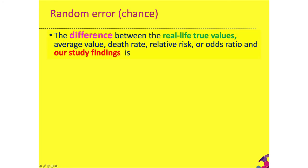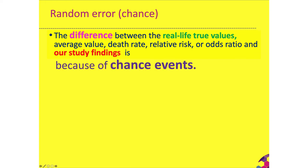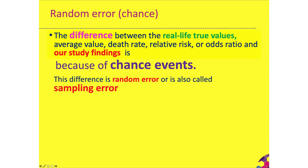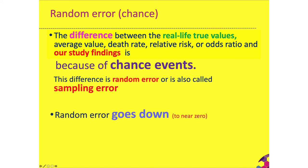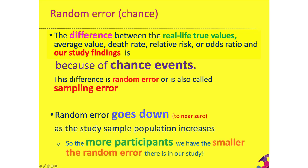Random error is the difference between the real-life value — death rate, relative risk, or odds ratio — and our study findings, caused by chance events. This is called random error or sampling error because we have sampled participants from the wider population. Random error goes down to near zero as the study sample increases; when we have tens of thousands or hundreds of thousands of participants, the random error effect gets smaller and our study is likely to be more accurate.